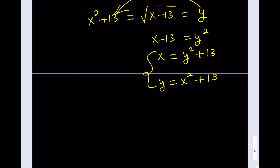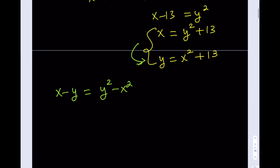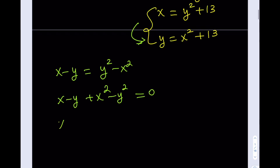Since I have some type of symmetry here, I can subtract these equations side by side. That gives me x minus y equals y squared minus x squared — the 13 cancels out. Putting everything on the same side and factoring by grouping, I get x minus y times 1 plus x plus y, which equals zero.